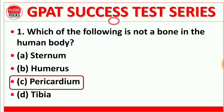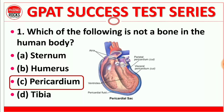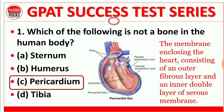Pericardium is not a bone. The pericardium is the membrane enclosing the heart, consisting of an outer fibrous layer and an inner double layer of serous membrane. It is a protective layer — a membrane covering the heart called the pericardium. Tibia, humerus, and sternum are bones.